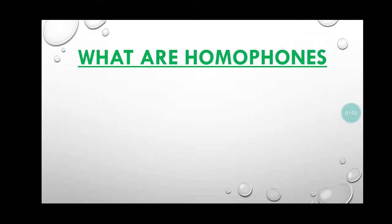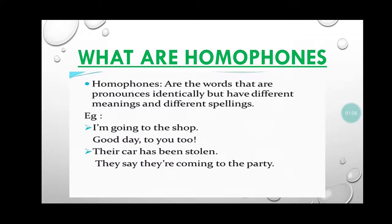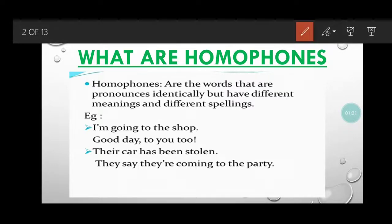So what are homophones? Homophones are words that are pronounced identically — they have the same pronunciation but different meanings and different spellings. For example: 'I am going to the shop' — look at this 'to' here. And 'Good day to you too' — look at this 'too' here. Both have the same pronunciation but different spellings. Here 'to' indicates direction — where he is going — and 'too' means 'same to you' or also.